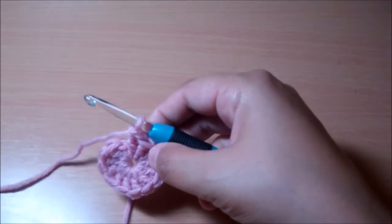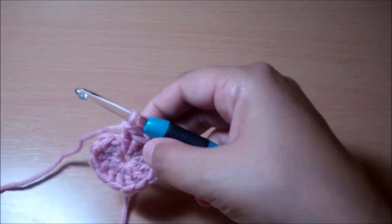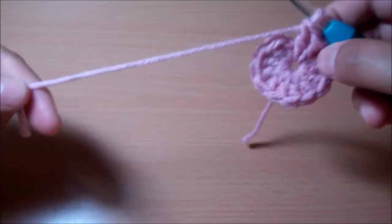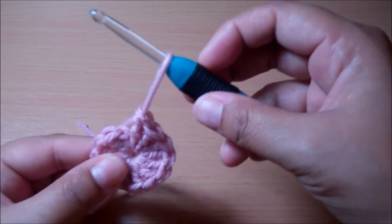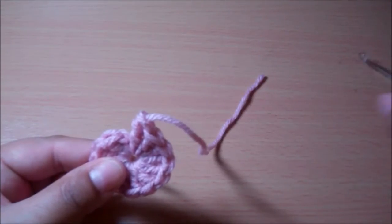What you want to do is cut your yarn and leave a long enough tail and then with your hook, pull that tail out just like so.